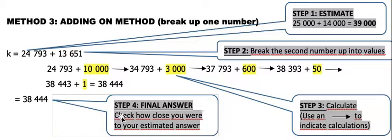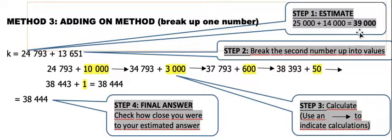So now we can see step 4, our final answer is 38,444, which is rather close to our estimated answer of 39,000.